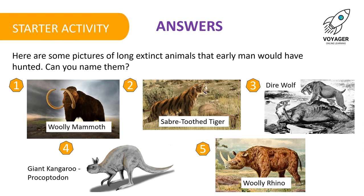Welcome back. Here are the answers to our starter activity. All of these long extinct animals have been named. Picture one shows the woolly mammoth. Picture two, the saber-toothed tiger. Picture three, the dire wolf. Picture four, the giant kangaroo, also called Procoptidon. And picture five, a woolly rhino.